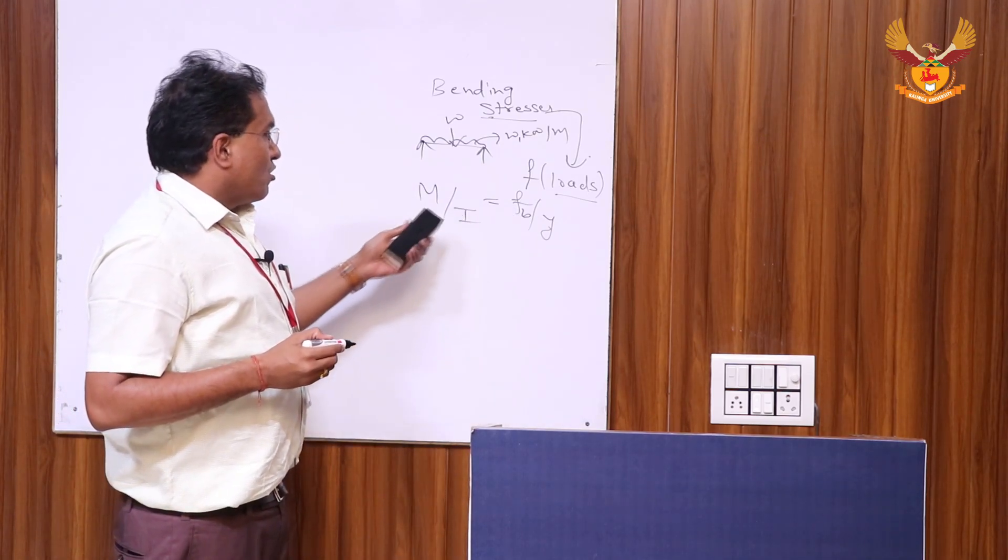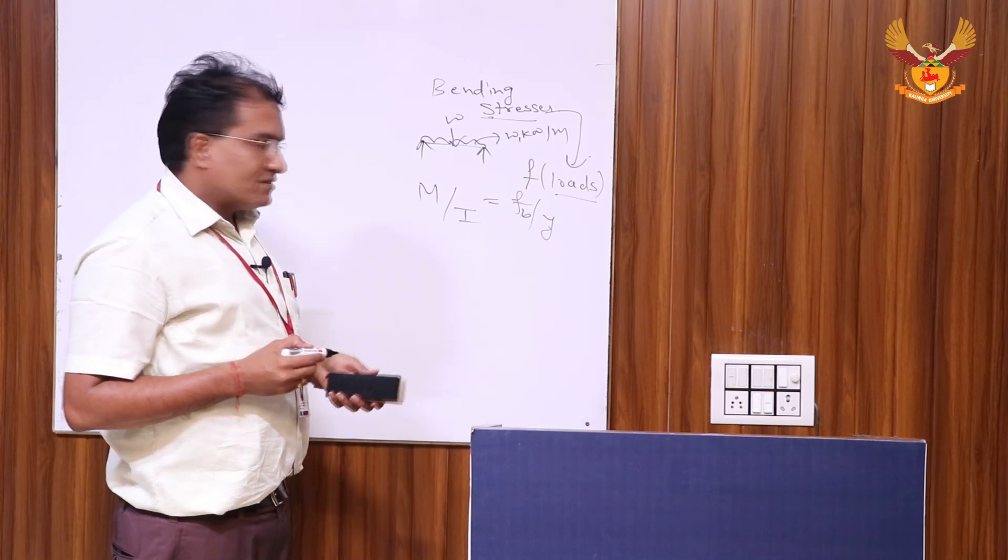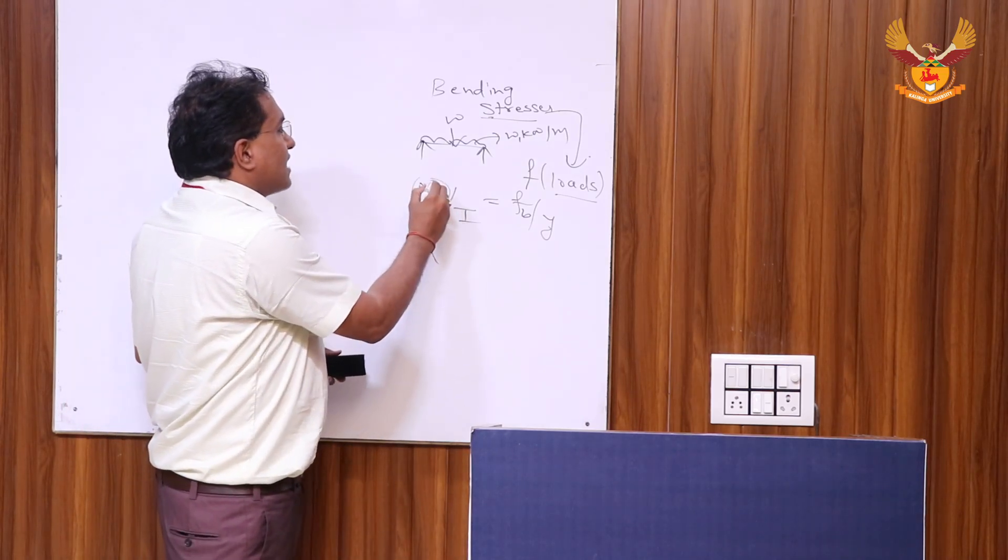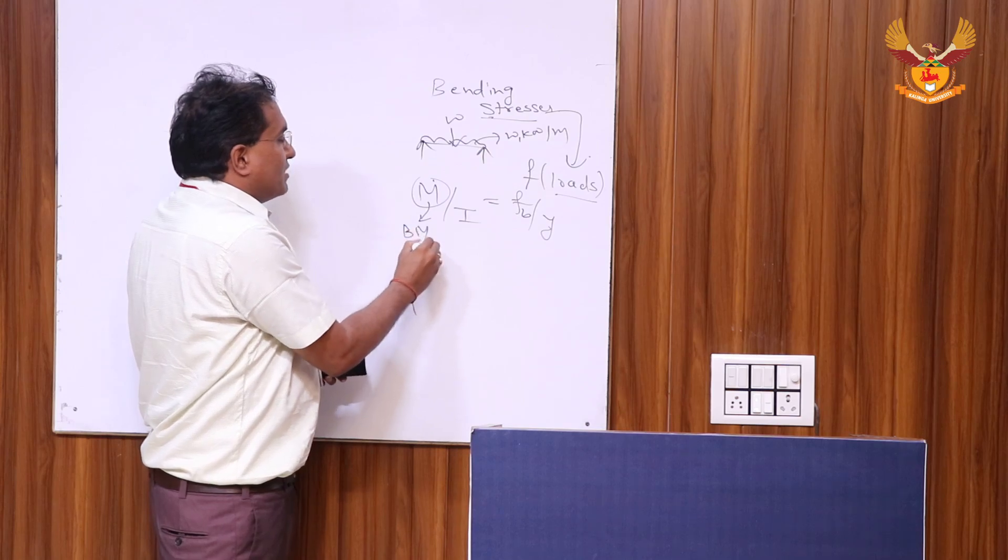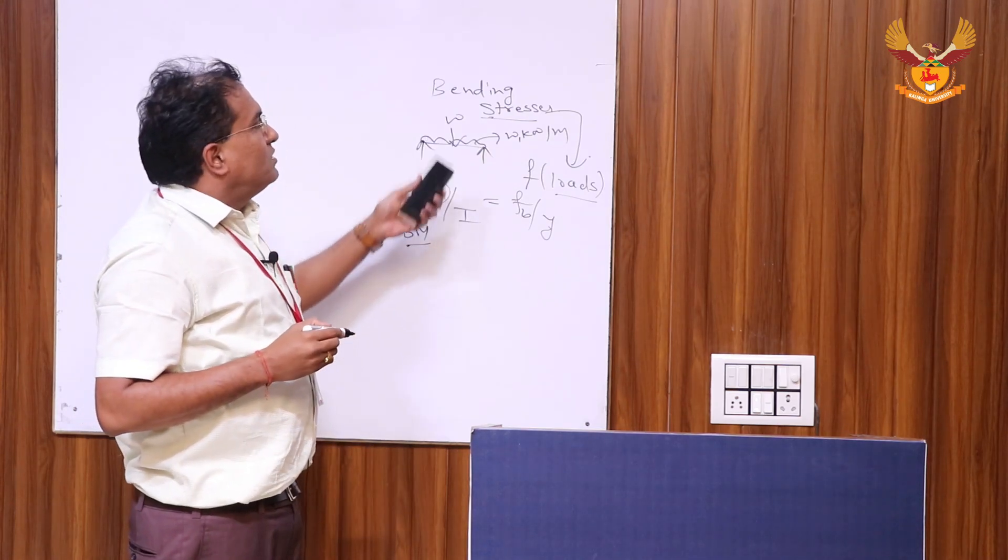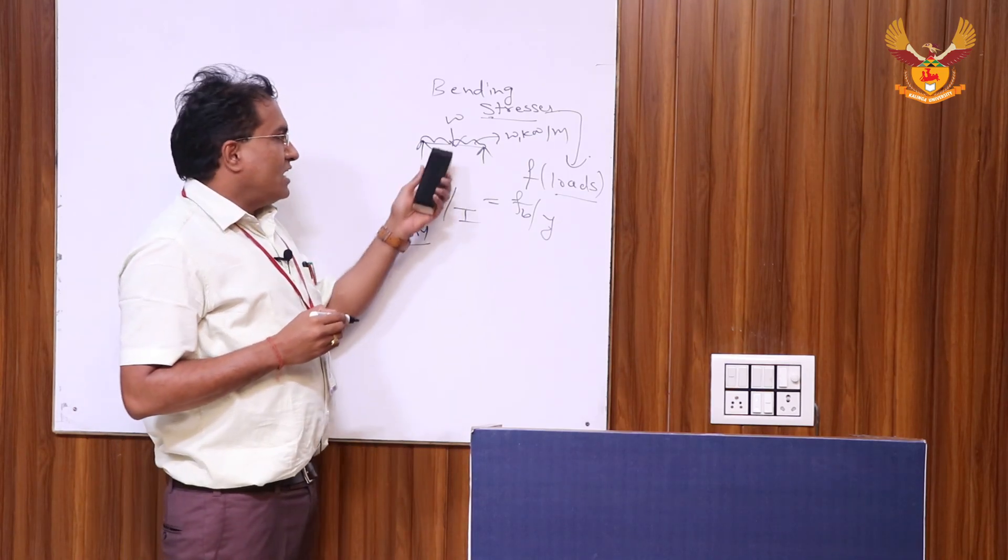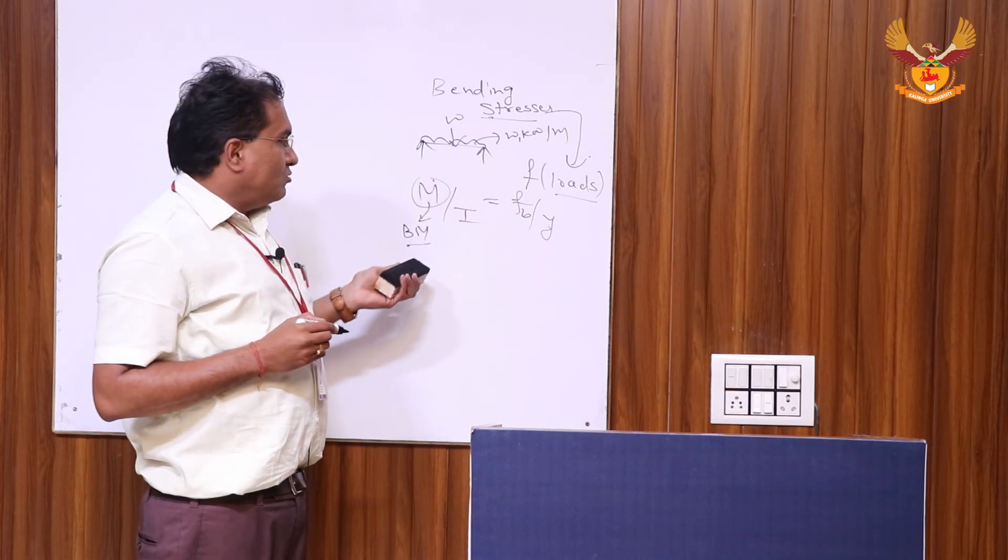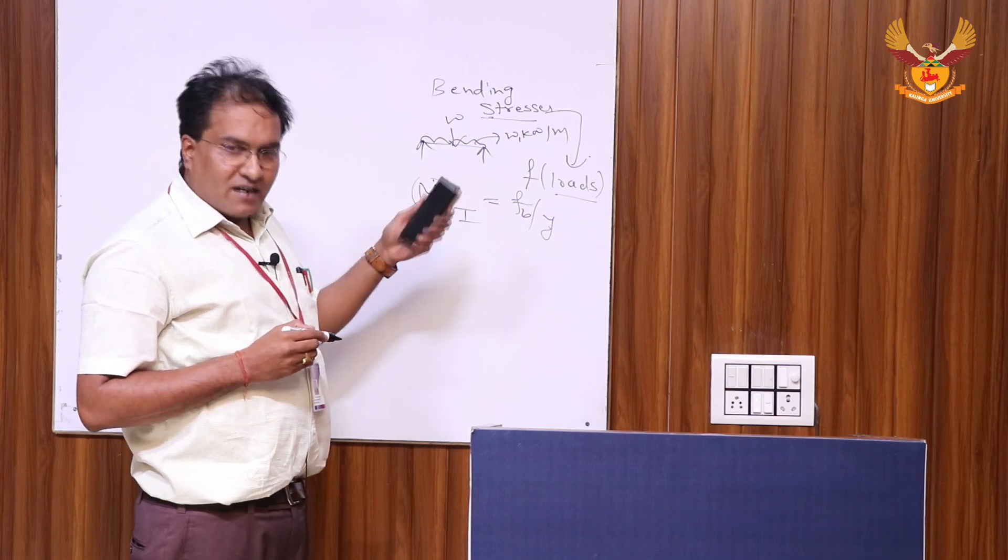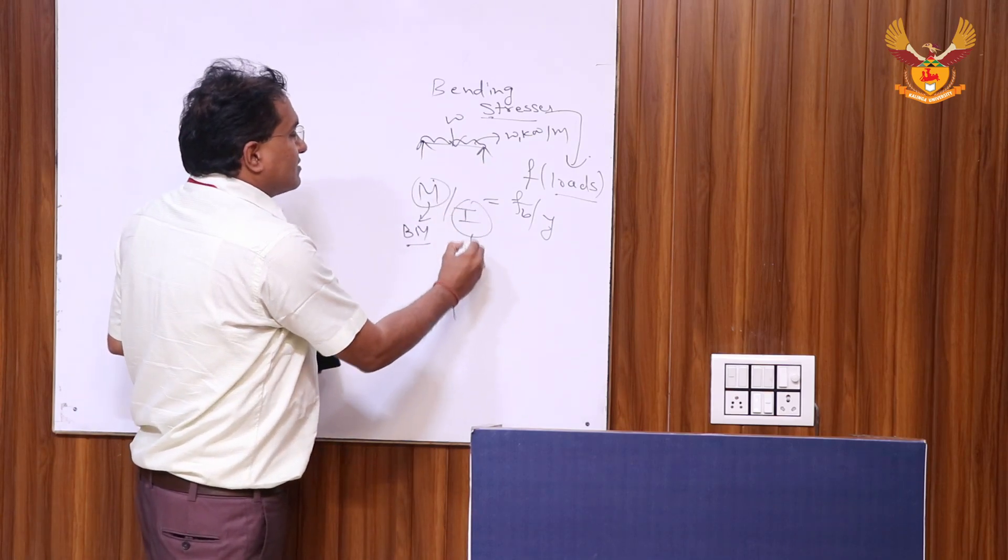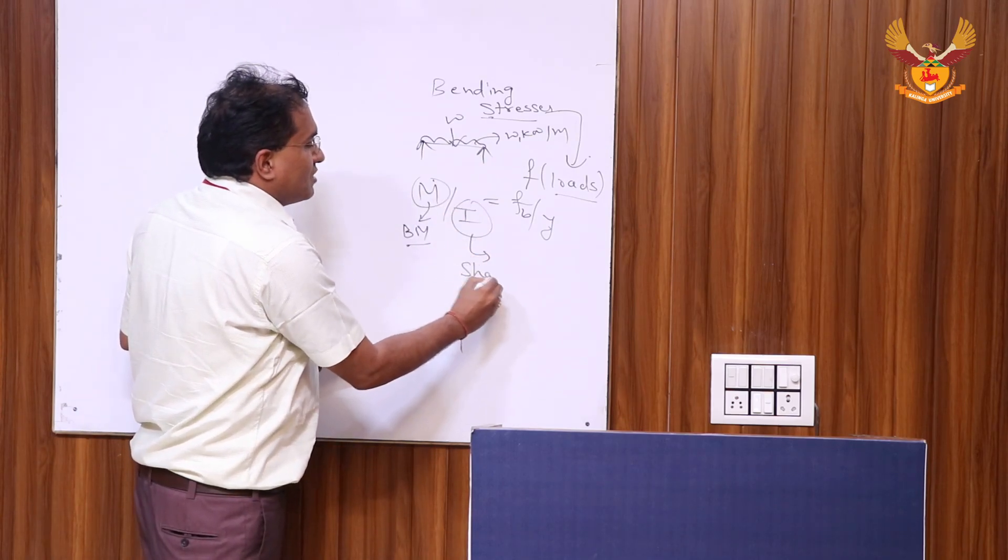M stands for maximum bending moment value. Whenever the beam is loaded, maximum bending moment value we have to evaluate and calculate by plotting bending moment diagram. I is the function of shape of the beam, whether it is a rectangular beam with dimensions B by D.